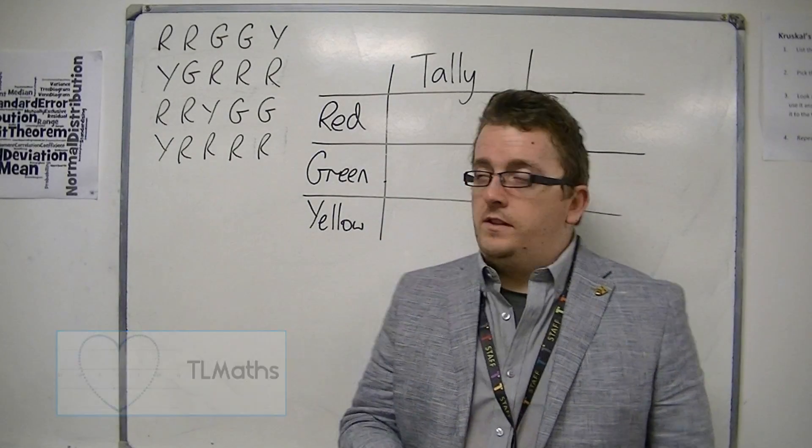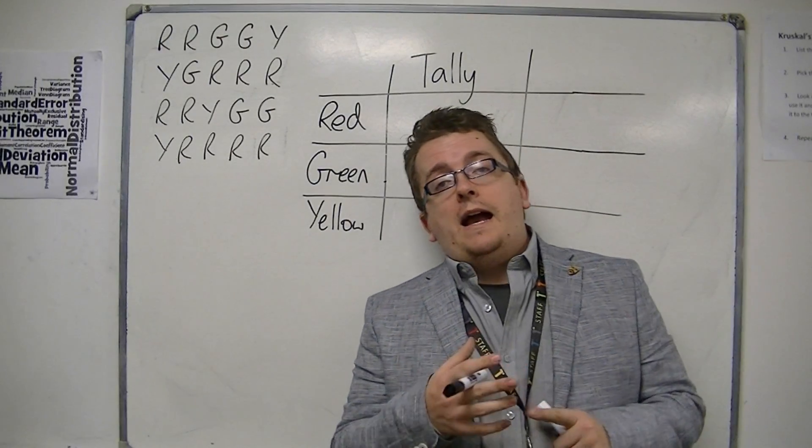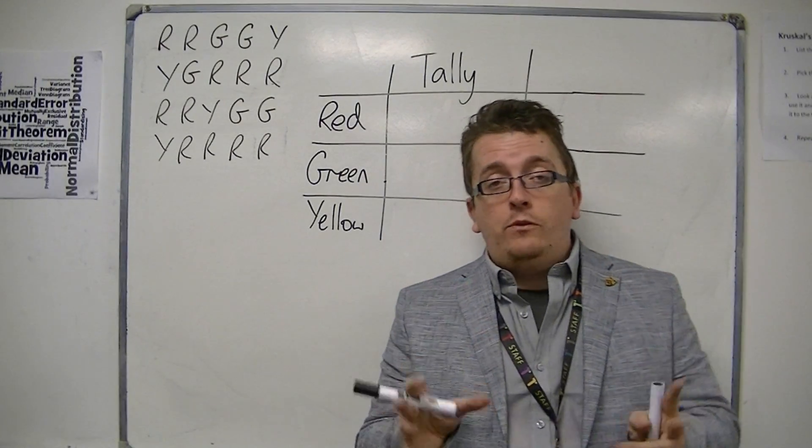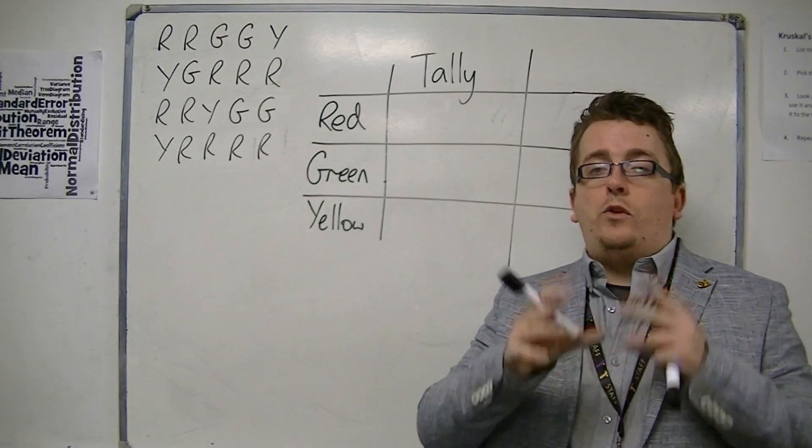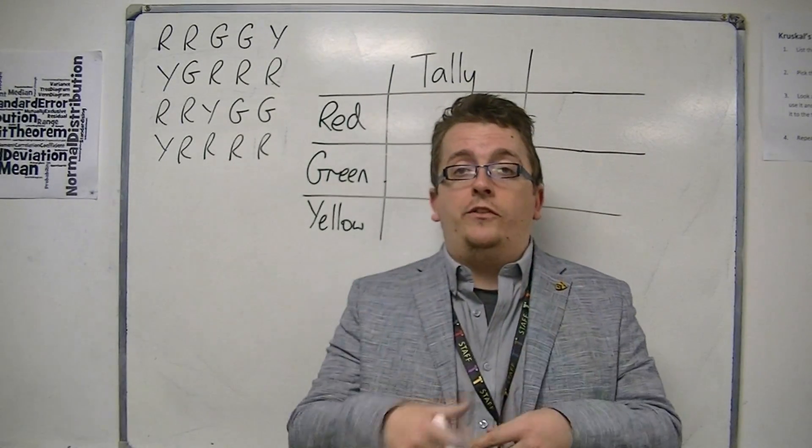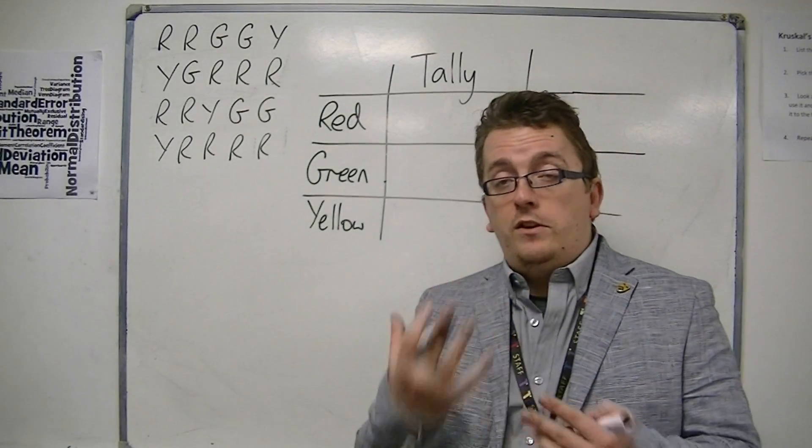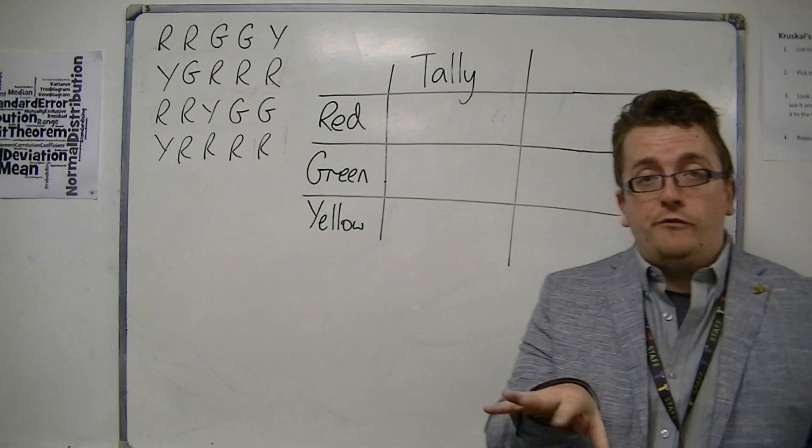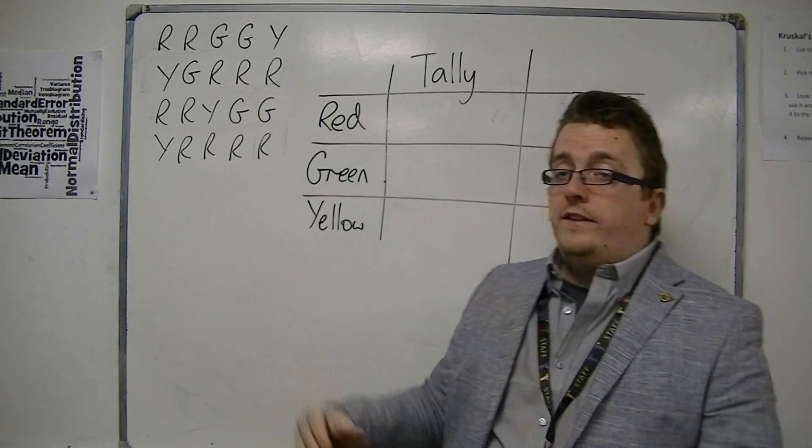So let's say I collect some data, and the data I collect is I go around the car park and I count the cars of different colors. So I'm looking for the number of cars that are red, the number of cars that are green, and the number of cars that are yellow. So they only have these three color choices. It's not very imaginative, but just run with it. And this is the way that I record it.